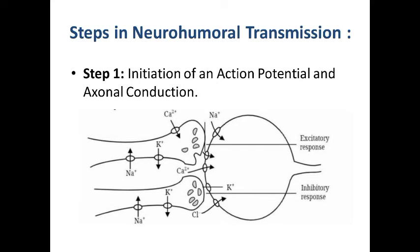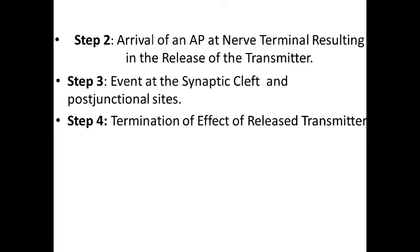Steps in neurohumoral transmission. First step is initiation of an action potential and axon conduction. Second step is arrival of an action potential at the nerve terminal resulting in the release of transmitter. Third step is events at the synaptic cleft and post-junctional sites. Fourth step is termination of the effect of the released transmitter.